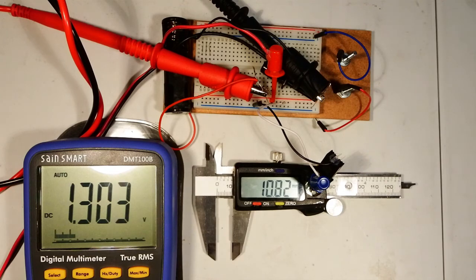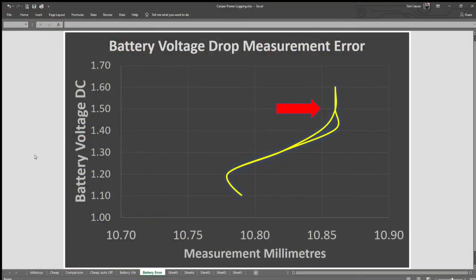Mitutoyos have a low battery warning. They'll tell you the battery needs to be changed. Cheap calipers don't do that. You don't know how flat the battery is. You don't know if they're measuring accurately or not. Plotted in Excel again, you can see that at 1.5, 1.6 volts we're measuring 10.85 millimeters. Coming down to 1.4 volts, you're now measuring differently from where it was before, and you'll have no indication that the battery is causing that measurement error.